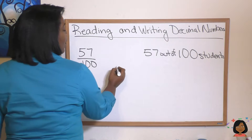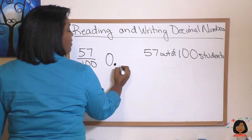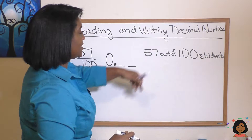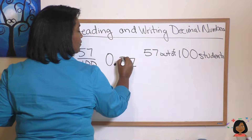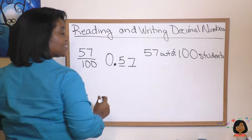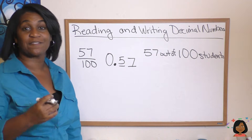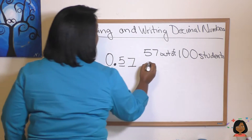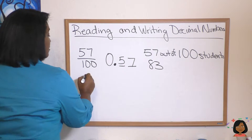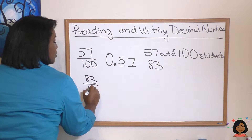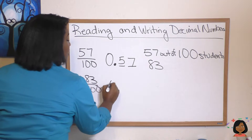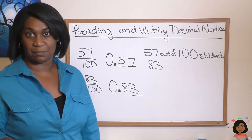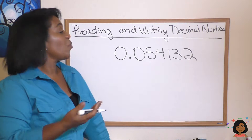Now how do we write that as a decimal? What I like to do is write the decimal first and then figure out how many spots I have. We know there are fifty-seven — the seven goes in the hundredths spot, the five is in the tenths — so there's our decimal: 0.57. Let's say eighty-three students had milk overall. That fraction is eighty-three over one hundred, and the decimal is 0.83, because we have that three in the hundredths place.